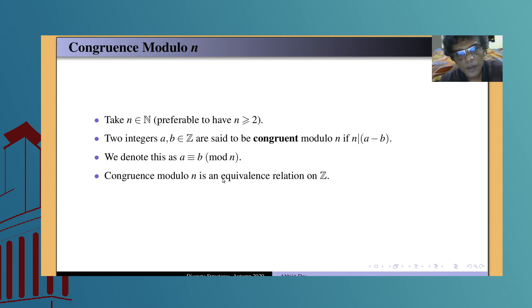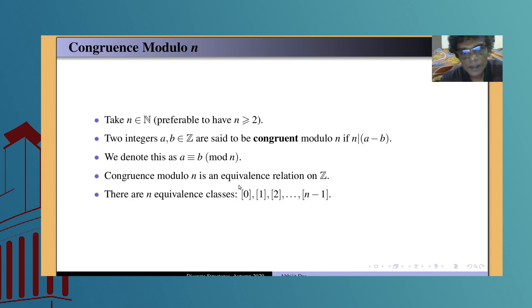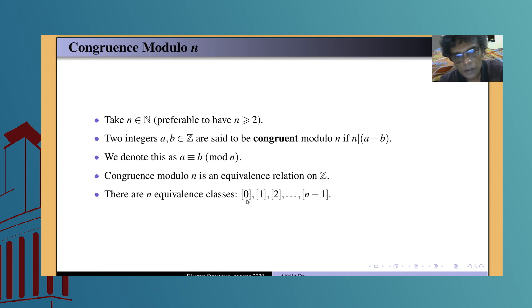Therefore, congruence modulo n is an equivalence relation on Z. Whenever we have an equivalence relation, we always have a set of equivalence classes. In this case, the equivalence classes are the class of 0, the class of 1, the class of 2, and so on up to class of n minus 1 — these are the possible remainders when dividing integers by n. These classes are all infinite, with infinitely many members in each class. So we pick one representative from each equivalence class: 0 from the first, 1 from the second, 2 from the third, and so on.